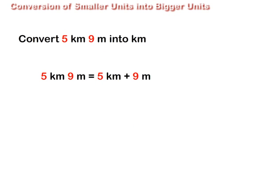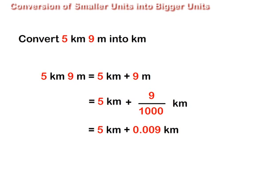To convert 5 km 9 m, we divide 9 m by 1000 to get 0.009 km. Thus, 5 km 9 m is equal to 5.009 km.